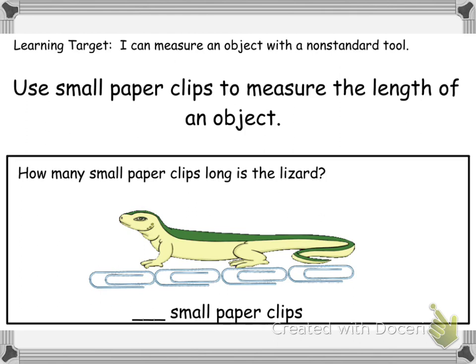Now let's look at the small paper clips. Remember the same measuring rules: no spaces or gaps, no overlaps, go from endpoint to endpoint — this is my endpoint — and you must use the same unit of measure, which means I have all small paper clips. I cannot try to use small and large to measure the same thing.